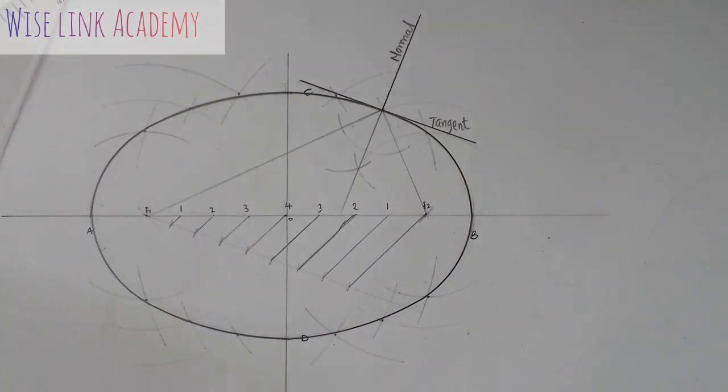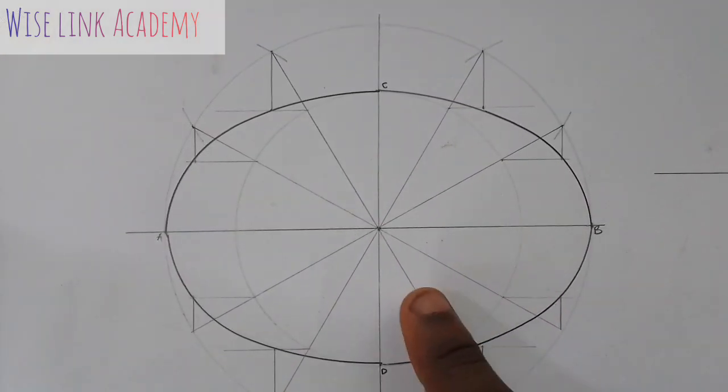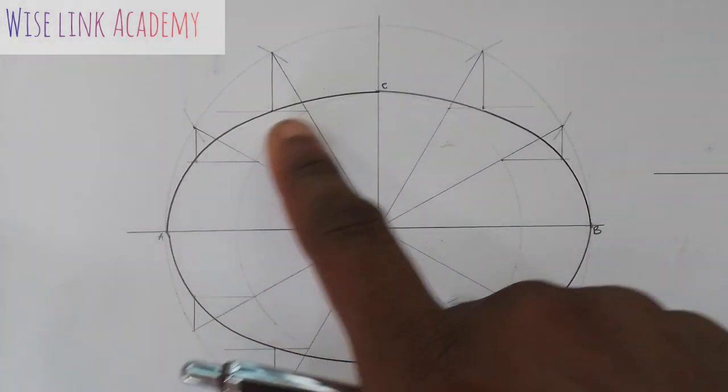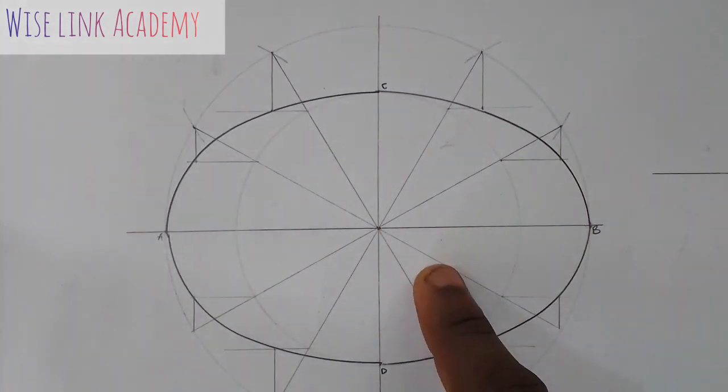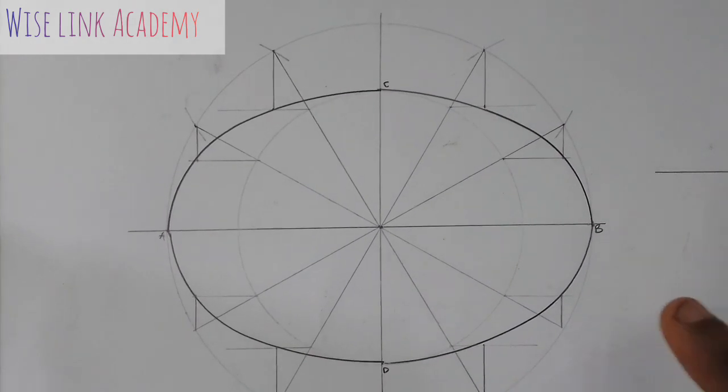So, let's consider another ellipse. Alright, this is another ellipse which we use what we call the auxiliary method, also called concentric method to draw.